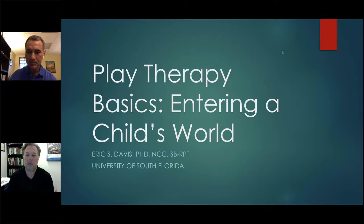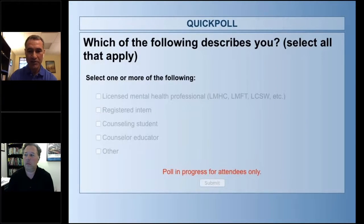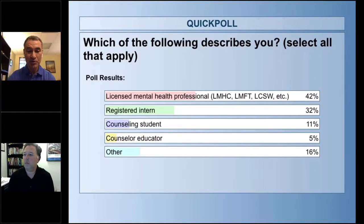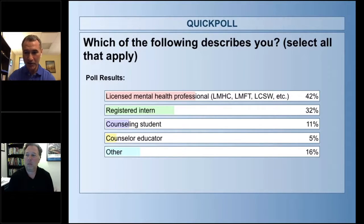The first polling question is which of the following describes you — you can select multiple options. Are you a licensed mental health professional, a registered intern, a counseling student, a counselor educator, or other? About 42% of you are licensed mental health professionals, 32% are interns, 11% are students, 5% counselor educators, and 16% other.